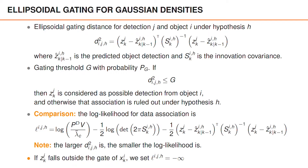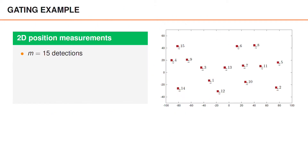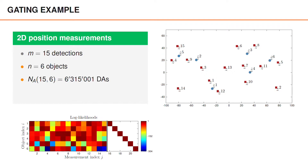If a detection J falls outside the gate of object I for some hypothesis H, the corresponding log likelihood is set to negative infinity, which approximates the logarithm of a likelihood of zero. Let's look at a gating example. We have a 2D scenario, so detections are 2D vectors. On the right, we have illustrated 15 example detections as red squares. Assume there are six objects; the corresponding predicted measurements Z-hat are illustrated as blue circles. For 15 detections and six objects, there are more than 6 million valid data associations.